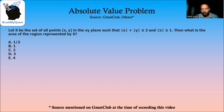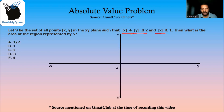So |x| + |y| ≤ 2 is given to us and |x| ≥ 1. Let's start with this one. Now if x and y were both positive, let's draw the x, y plane first.